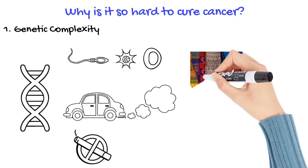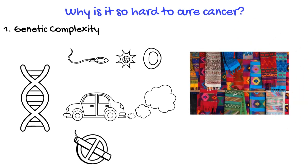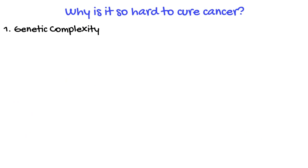Imagine our genetic code as a complex tapestry or woven fabric. Cancer mutations are like knots in that tapestry, disrupting the harmony. Untangling those knots and restoring normalcy is akin to finding a specific thread and carefully unraveling it without damaging the rest of the tapestry.